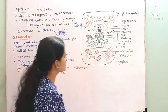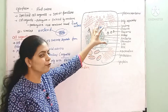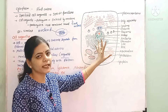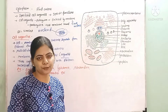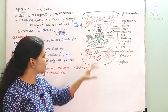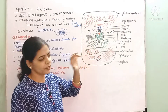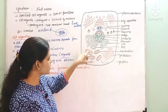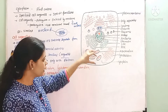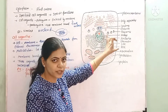So, what is cytoplasm? Cytoplasm is the fluid content of cells. In this fluid content, different cell organelles are present. The red color dotted area is the fluid content, and within it we have different cell organelles present.